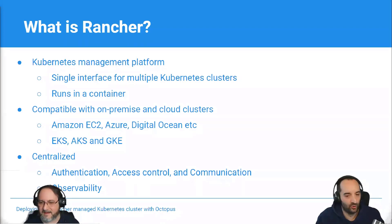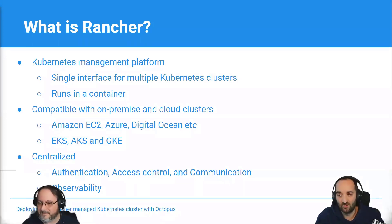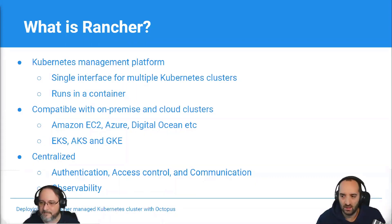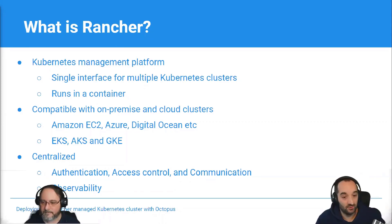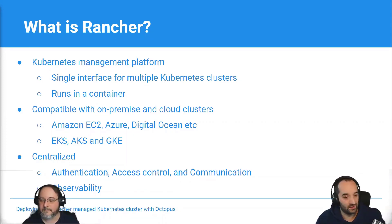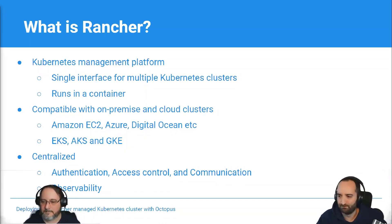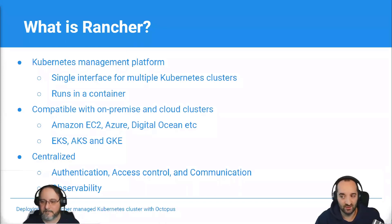Exactly. This is one of the problems that Rancher helps with — it's a Kubernetes management platform that allows you to manage multiple clusters in a single place. Another thing to note is that Rancher itself is quite unique in that it can be run from anywhere that Docker is installed, because the platform itself runs in a container. This makes its footprint nice and lightweight. Rancher also allows you to manage both on-premise and Kubernetes clusters hosted in the cloud.